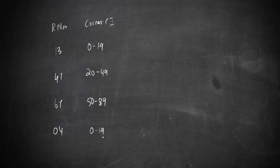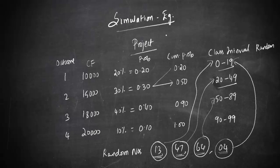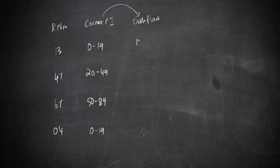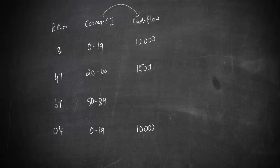Now we need to find the corresponding cash flows associated with each class interval. Going back to the earlier working, the class interval 0 to 19 corresponds to a cash flow of 10,000. The interval 20 to 49 gives a cash flow of 15,000, and 50 to 89 gives 18,000. So the random cash flows generated are 10,000, 15,000, 18,000, and 10,000.